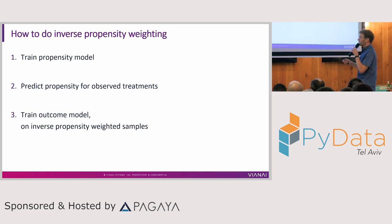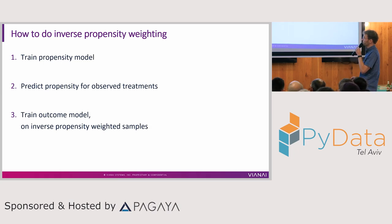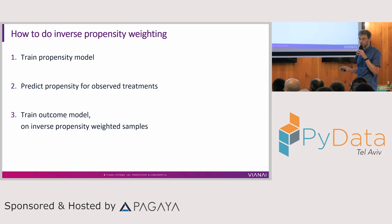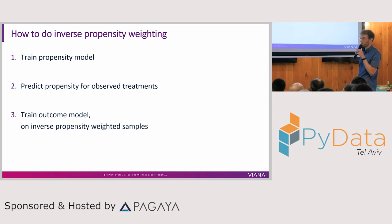The recipe in short: train a propensity model, predict the propensity for all observed treatments, and then train an outcome model using typical machine learning approaches — however, weight your samples by the inverse propensity from the previous step.